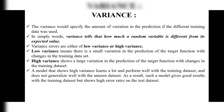Variance shows the difference — variance is nothing but difference. Variance errors are either of low variance or high variance. Same like bias, where we have high bias and low bias, here in variance also we have two types: low variance and high variance. Low variance means there is a small variation in the prediction of the target function with changes in the training data set.